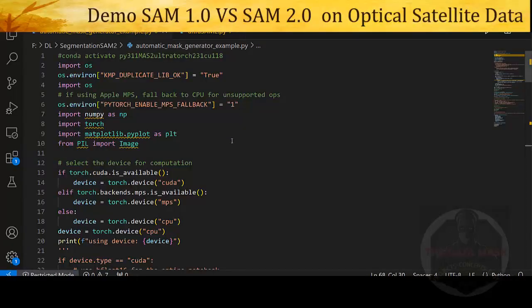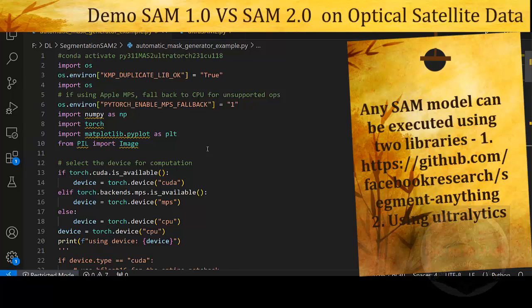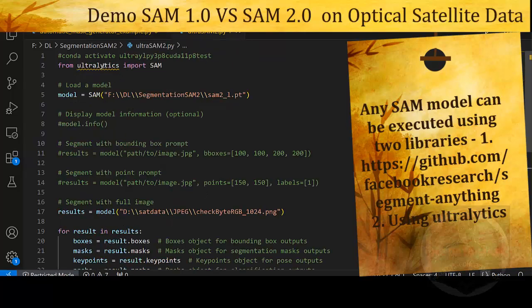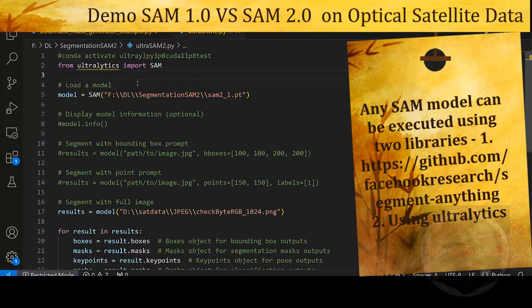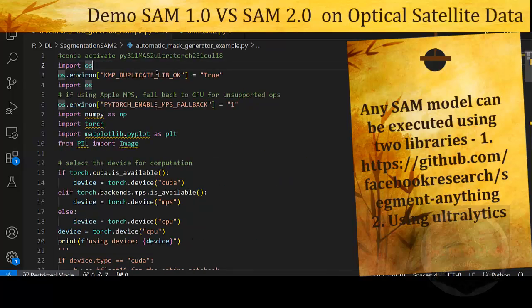Here we have demonstration for SAM as well as SAM 2. Same image I have executed with SAM as well as SAM 2 in various modes. You can use SAM using Ultralytics also, and you can use SAM with their native repository. SAM 2 is also integrated in Ultralytics as well as SAM 2 has its own repository. To execute it, if you go on the GitHub repository of SAM or SAM 2, there will be automatic mask generator examples, so you just have to create your own Python environment and need to execute this file.